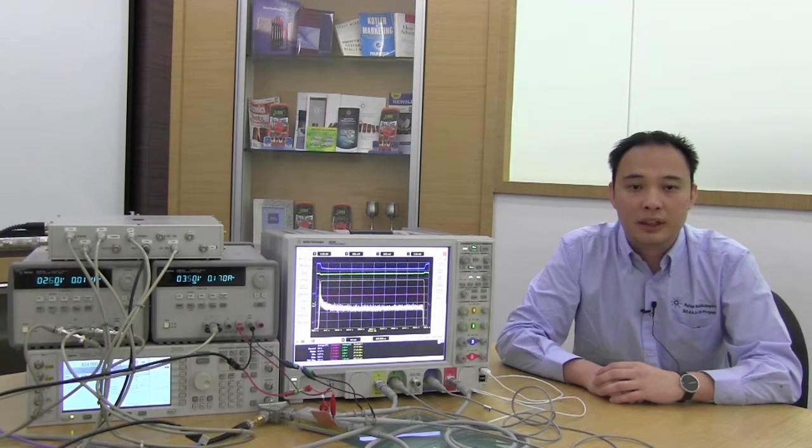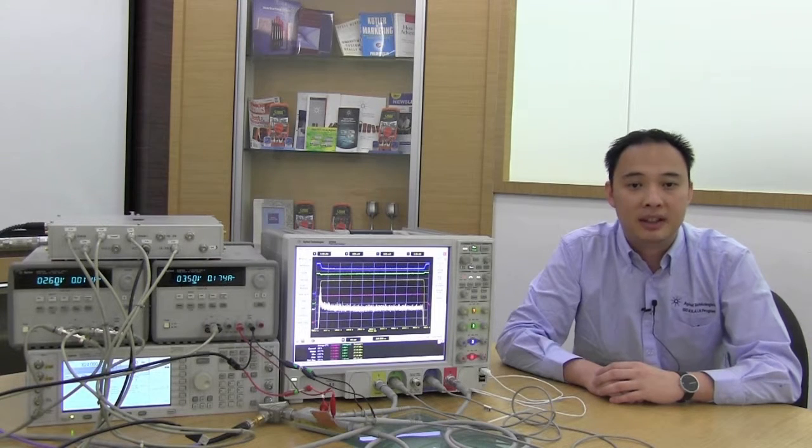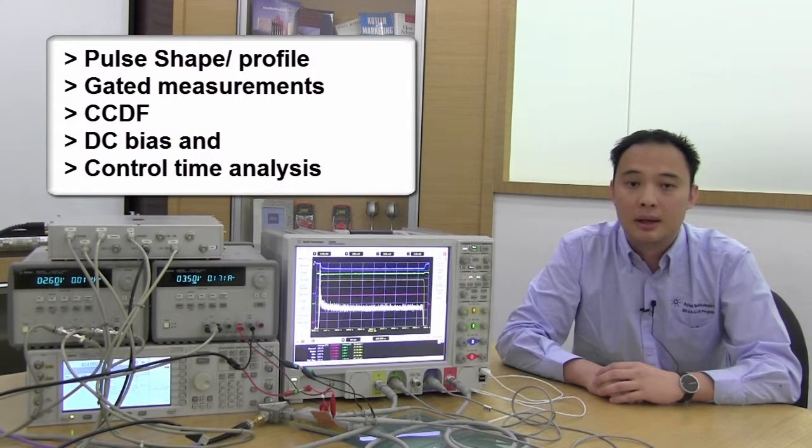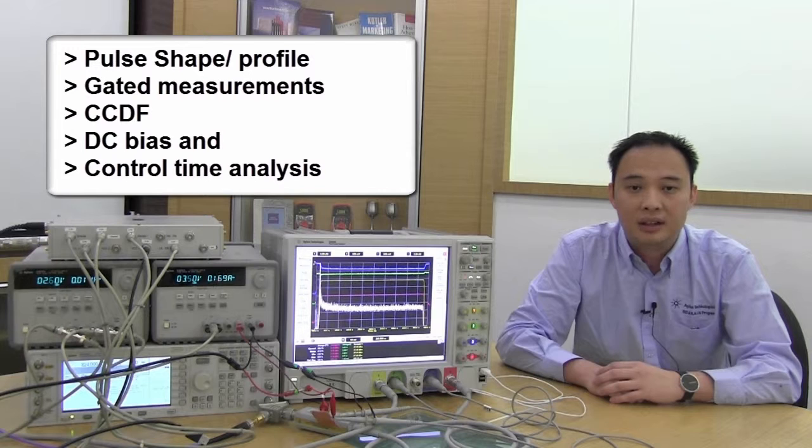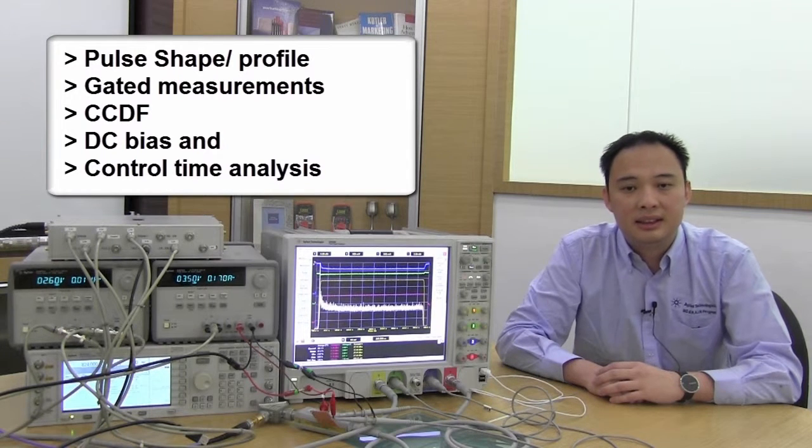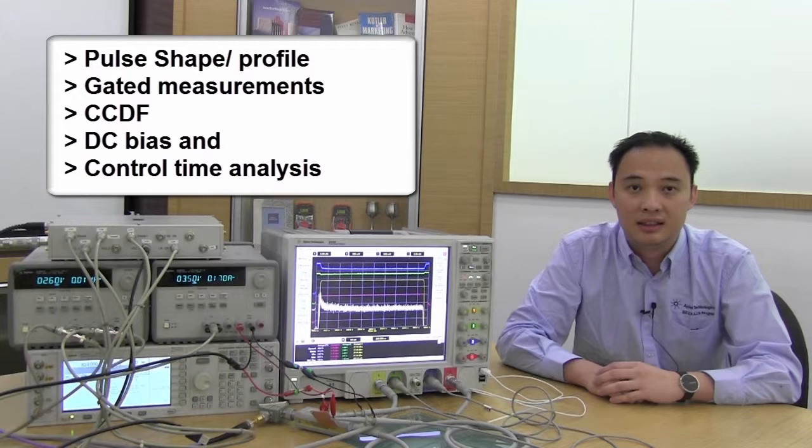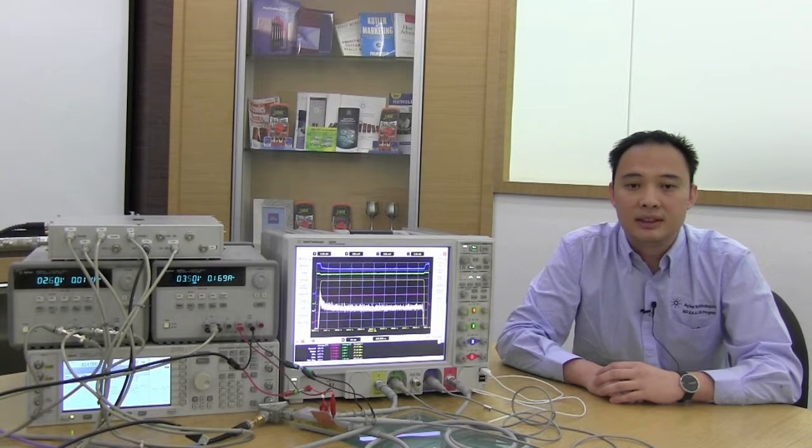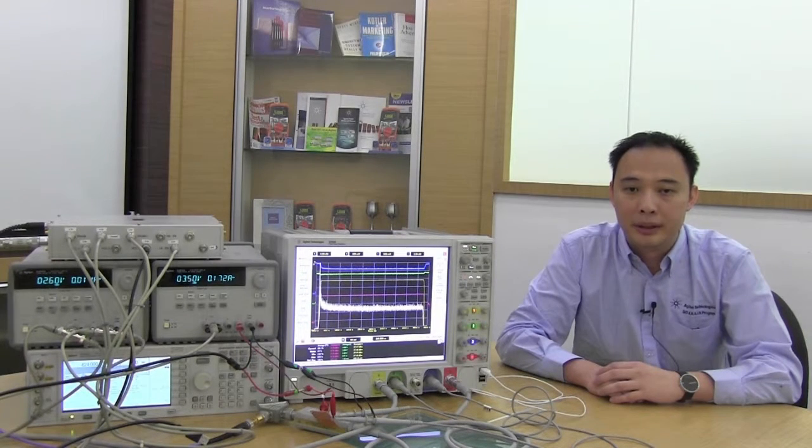The 8990B is also capable of measuring power amplifier characteristics such as pulse shape, profile, gated measurements, CCDF, DC bias and control time analysis. All these features are available with the new firmware upgrade which can be downloaded at no additional cost.